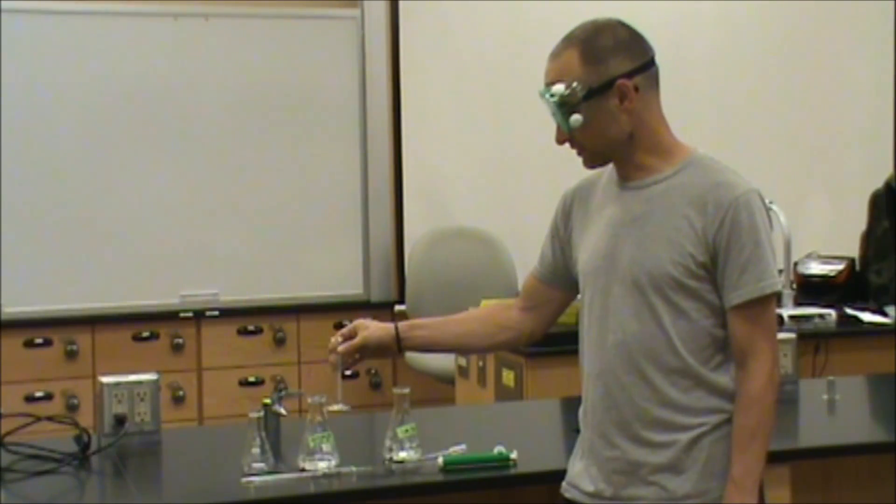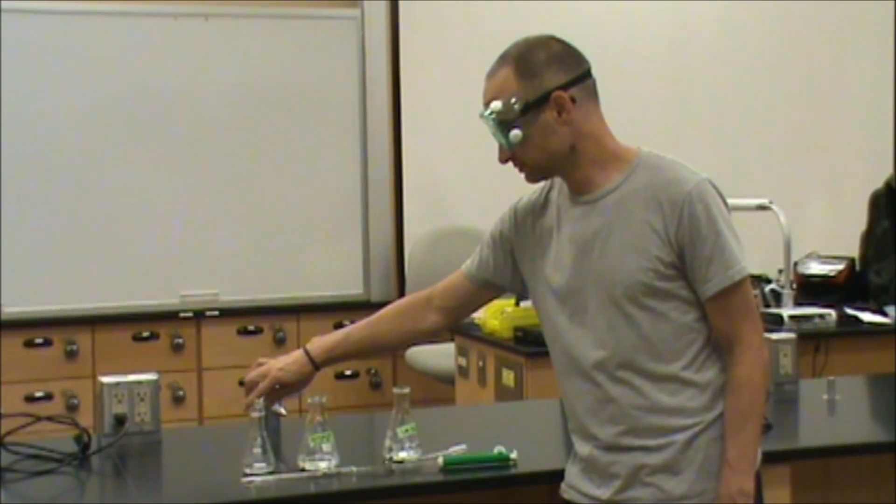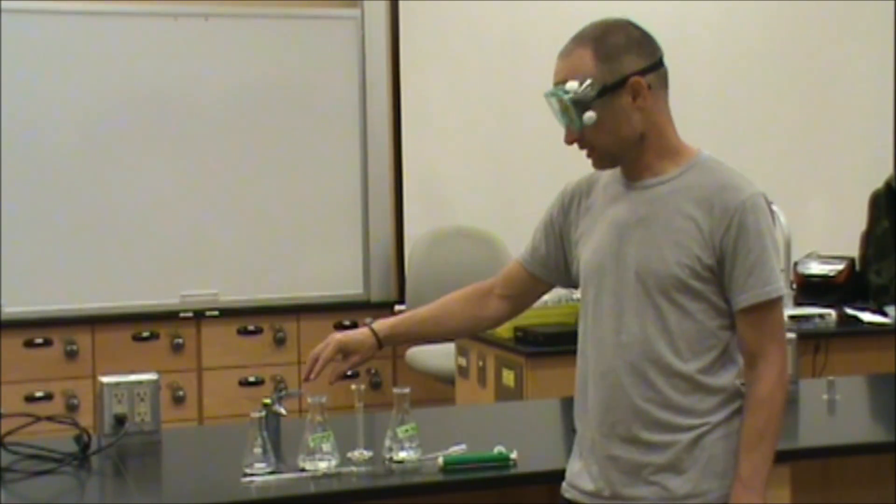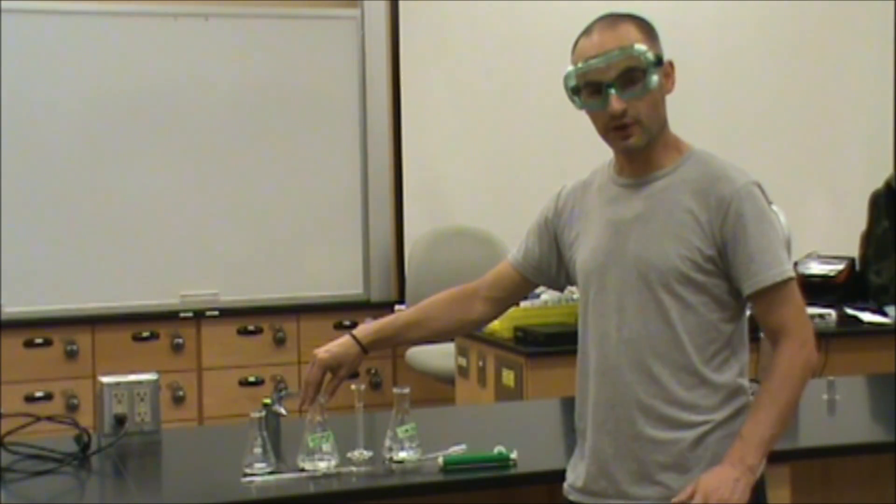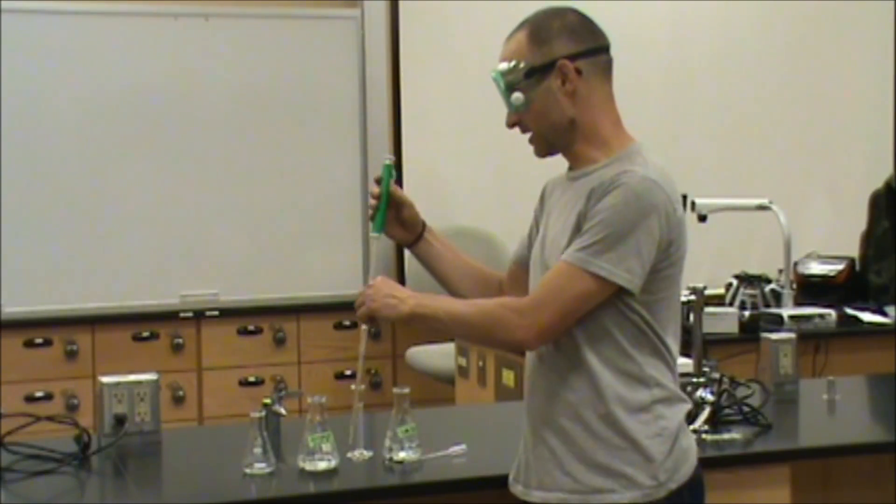I'm now going to add the 10 milliliters of sulfuric acid to our 125 milliliter Erlenmeyer flask. The peroxide, on the other hand, our volume measurement does have to be very accurate, so we're going to be using a volumetric pipette for this.